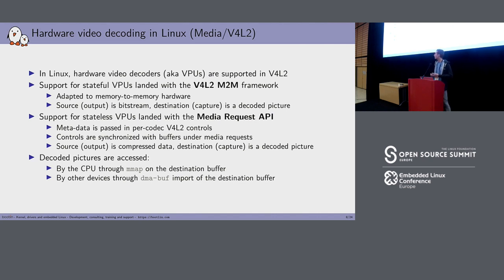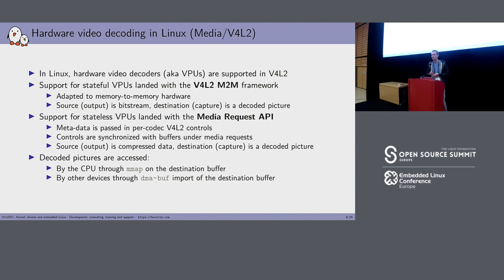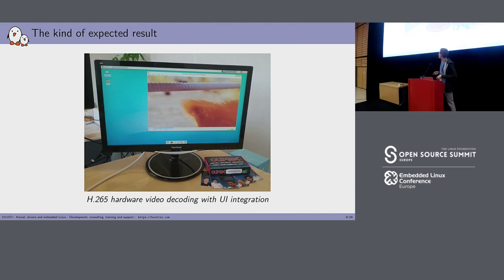Once we have our V4L2 drivers and decoded pictures, what do we do with them? We can read them from the CPU using mmap. But more interestingly, if you want to pipe that to another device — your display engine — to display the decoded video on the screen, we can use a mechanism called DMA-BUF. This just provides a reference to the memory area where the decoded picture is and passes that between different drivers so we don't have to do an extra copy. The expected result is to be able to integrate a decoded video with a user interface on a desktop environment.